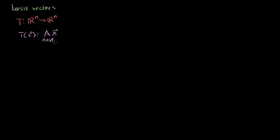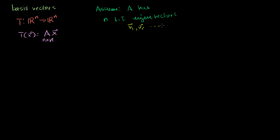Let's say that we have n linearly independent eigenvectors of A — and this isn't always going to be the case, but it can often be the case. So let's assume that A has n linearly independent eigenvectors. Now, n linearly independent vectors in R^n can definitely be a basis for R^n, and what I want to show you in this video is that this makes a particularly good basis for this transformation.